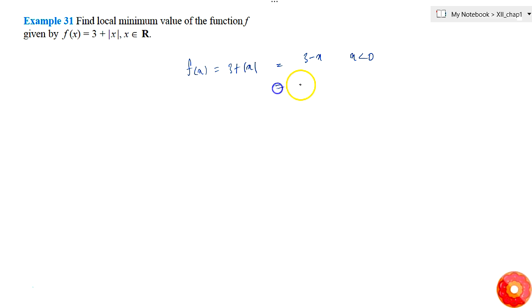It equals 3 at x = 0, and equals 3 + x when x > 0. We need to find the local minimum of this piecewise function.